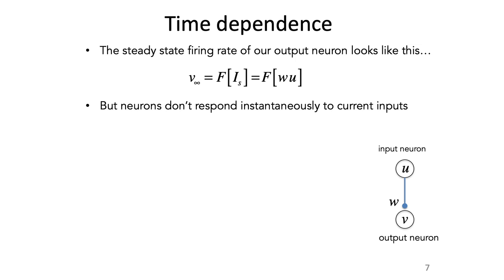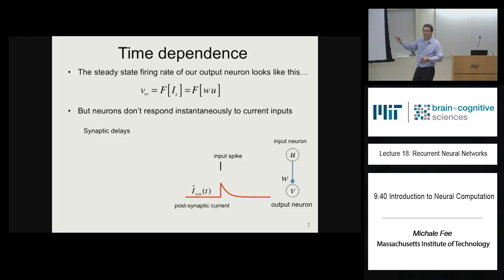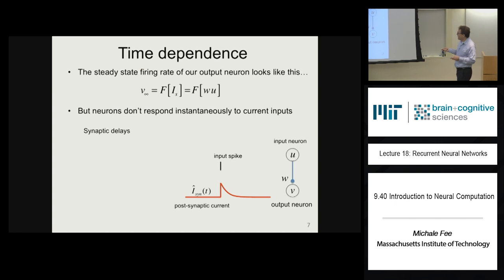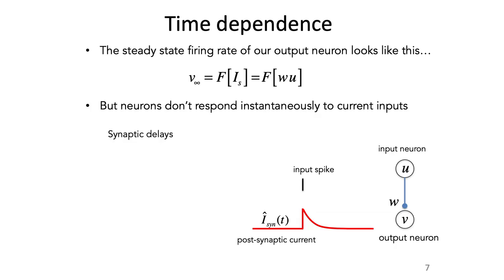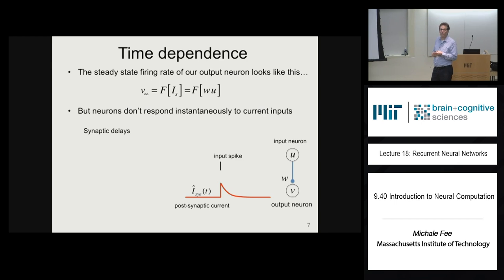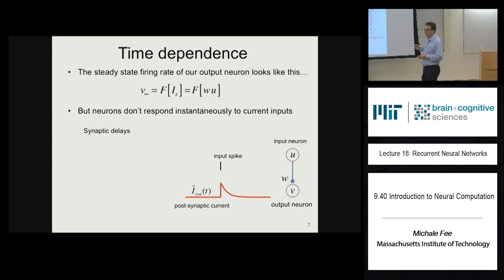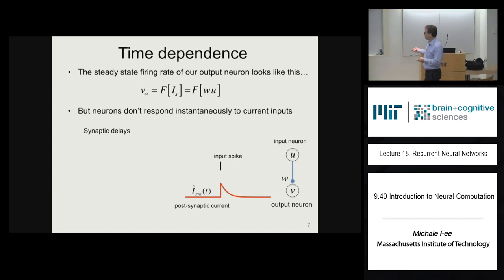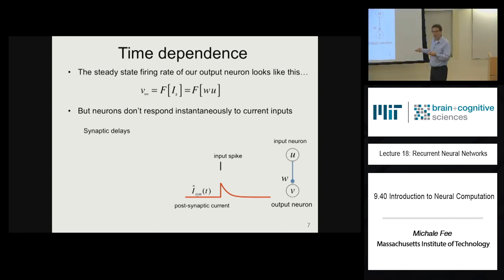Neurons don't respond instantaneously to inputs. There are synaptic delays, integration of membrane potential — things change over time. A specific example is that if you have an input spike, you produce a postsynaptic current that jumps up abruptly as synaptic conductance turns on, then the synaptic conductance decays away as neurotransmitter unbinds from the receptor, giving a synaptic current that decays over time. That's a simple kind of time dependence that leads to time dependence in the output firing rate.